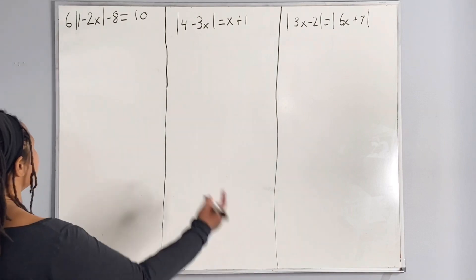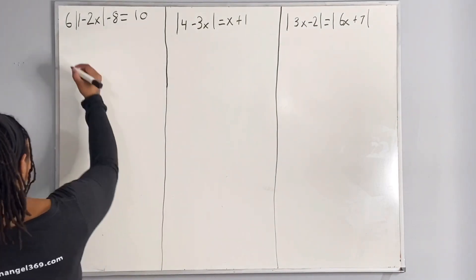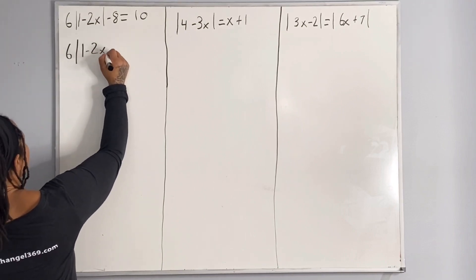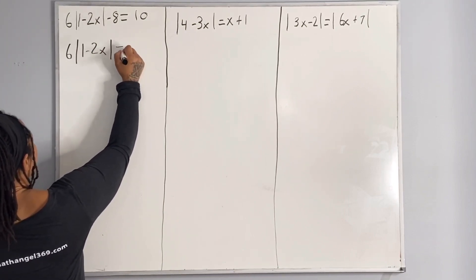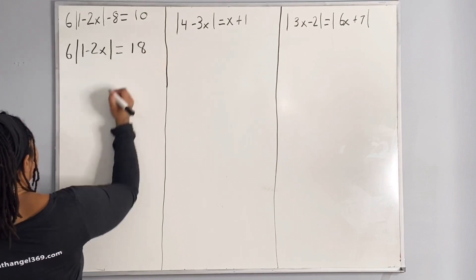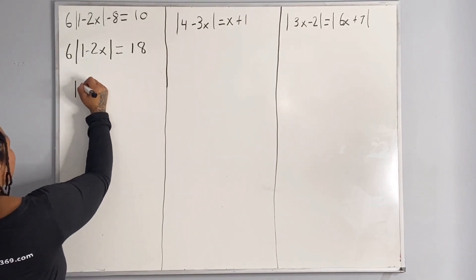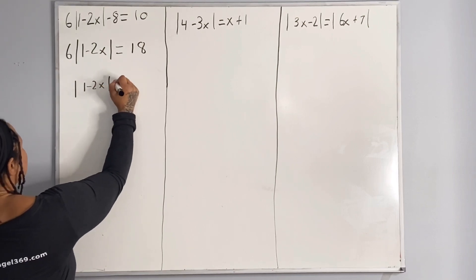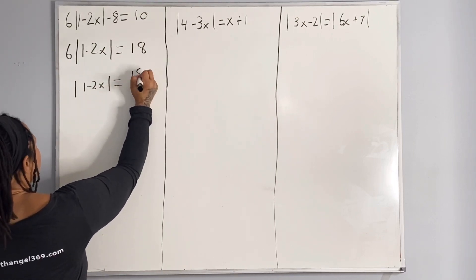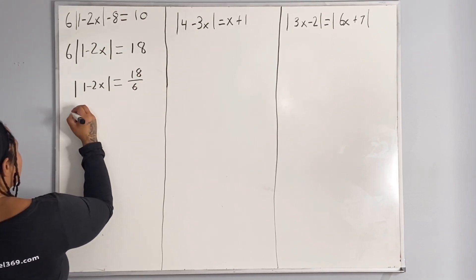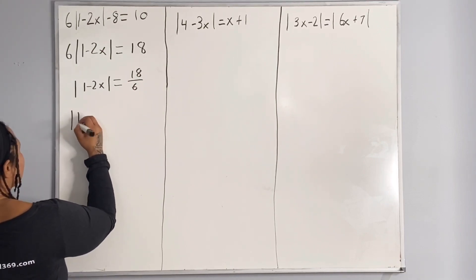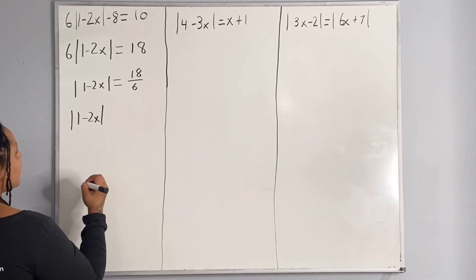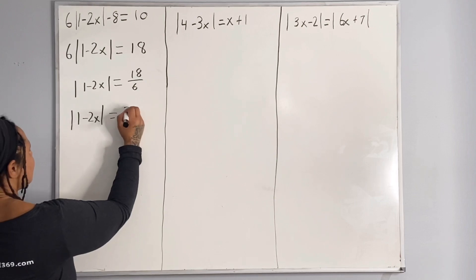We're going to bring 8 over to the other side of the equation, so we have 6 times the absolute value of 1 minus 2x is equal to 18. Now we're going to divide both sides by 6, so we get the absolute value of 1 minus 2x is equal to 18 divided by 6, which is 3.